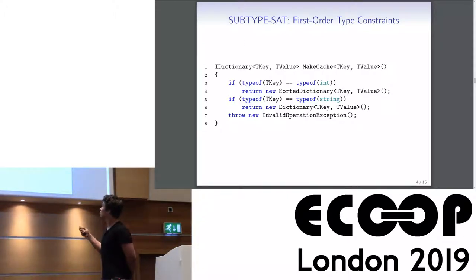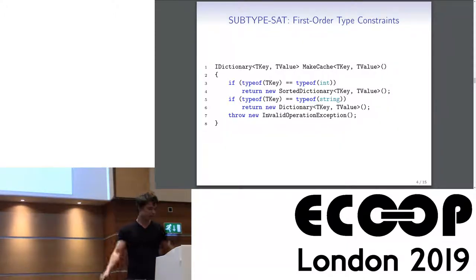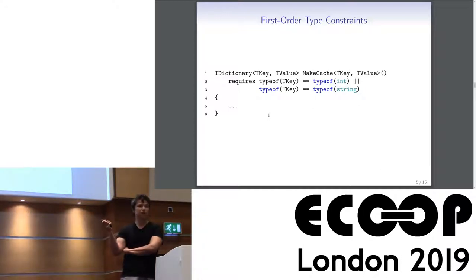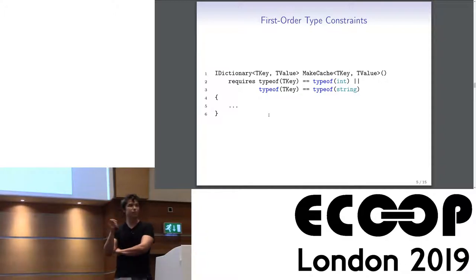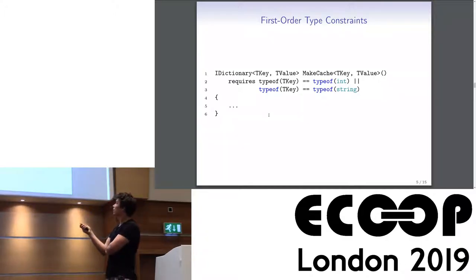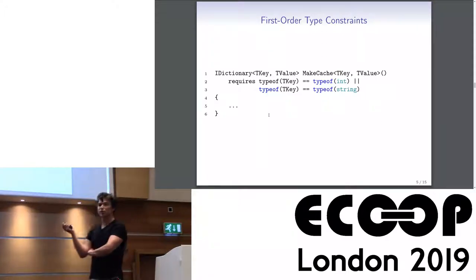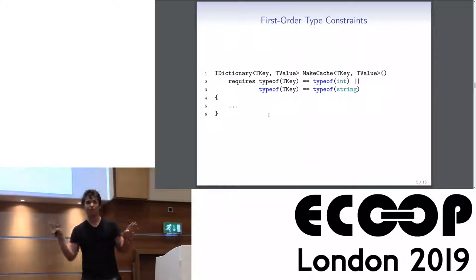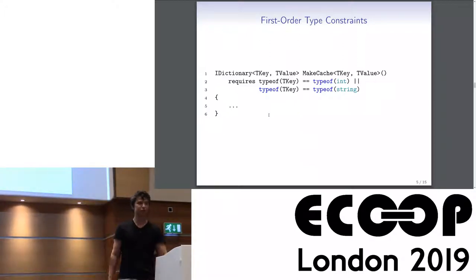For example, we may need a disjunction that C# does not support. If we have an effective decision procedure for the subtype-set problem, we could write nominal types in the assertion language of a prover — for instance, a deductive verifier like Spec# — and express arbitrary first-order type constraints over nominal types.